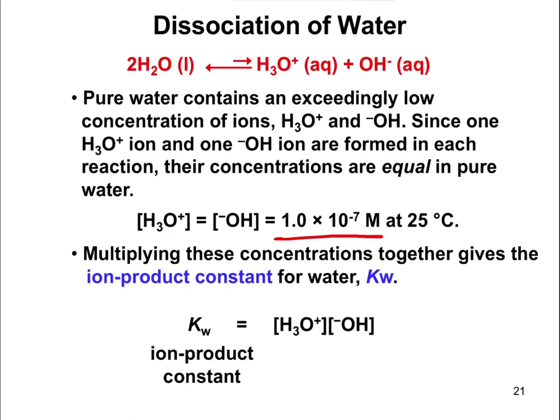It changes a little bit depending on temperature, but not much. In pure water, the concentration of H₃O⁺ and the concentration of OH⁻ must be equal to each other. Because if one water molecule loses an H⁺ to become OH⁻, another water molecule must gain that H⁺. So these two concentrations in pure water have to be exactly the same.